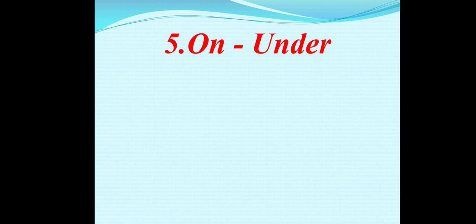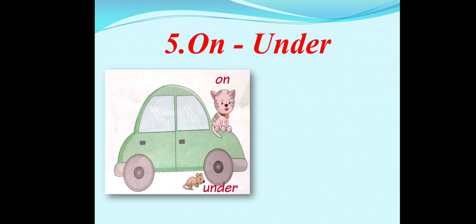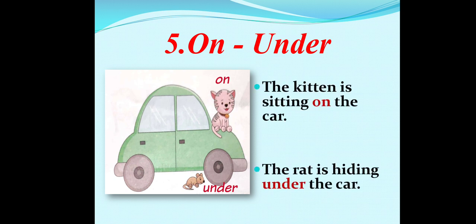The last, fifth one, is on, under. As you can see in this picture, there is a green color car. A kitten is sitting on the car. And the rat is hiding under the car.